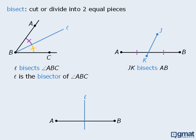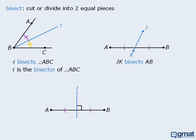Finally, if a line divides a line segment into two equal pieces, and that line is perpendicular to the line segment, then that line is called a perpendicular bisector.